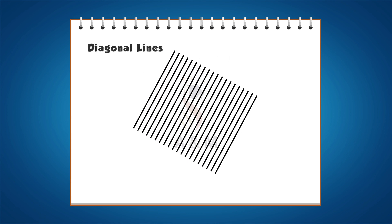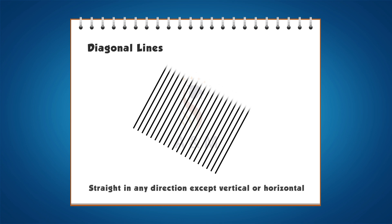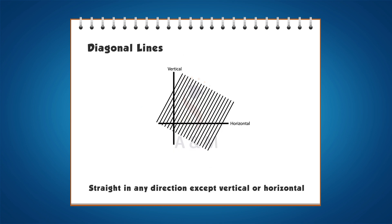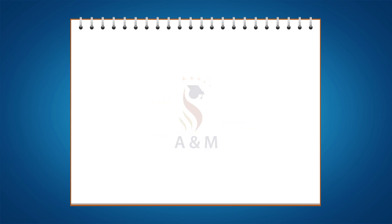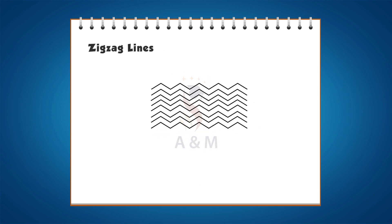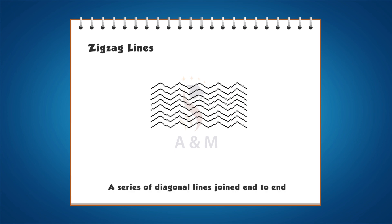Third, diagonal lines. Diagonal lines are lines that are straight in any direction except vertical or horizontal. Fourth, zigzag lines. Zigzag lines are a series of diagonal lines joined end to end.